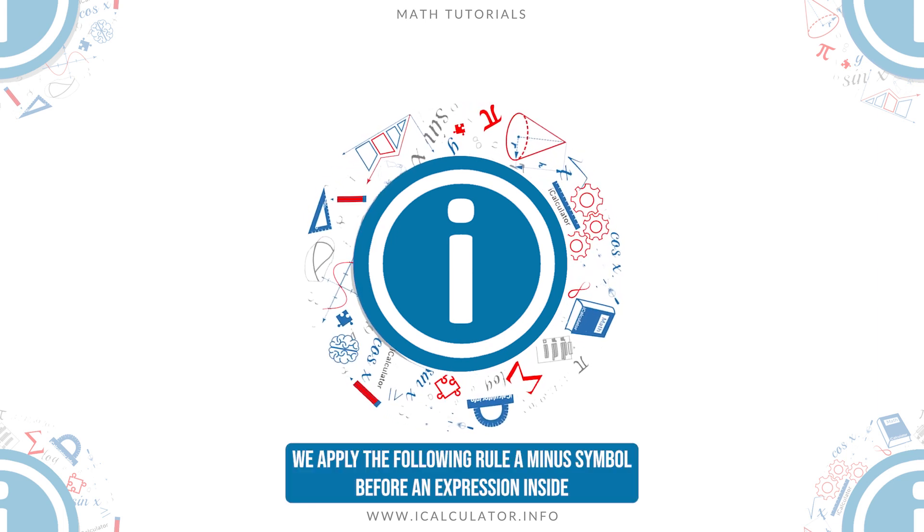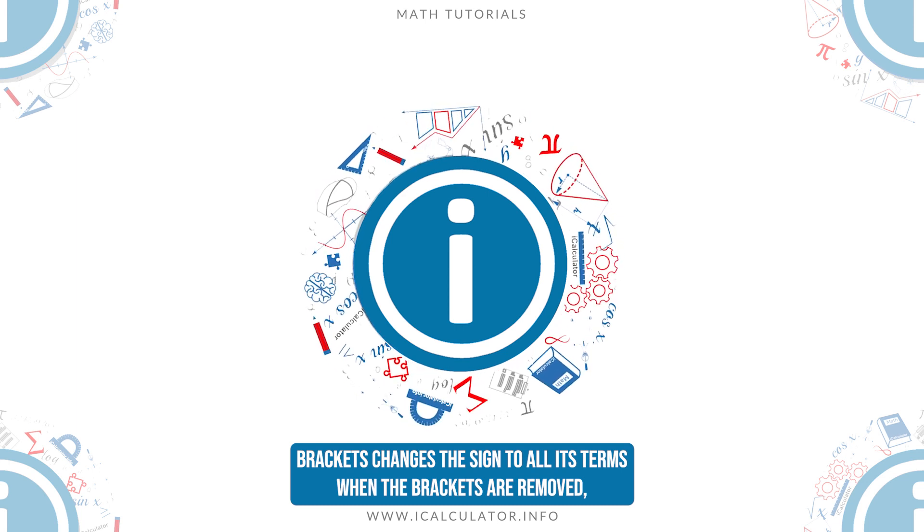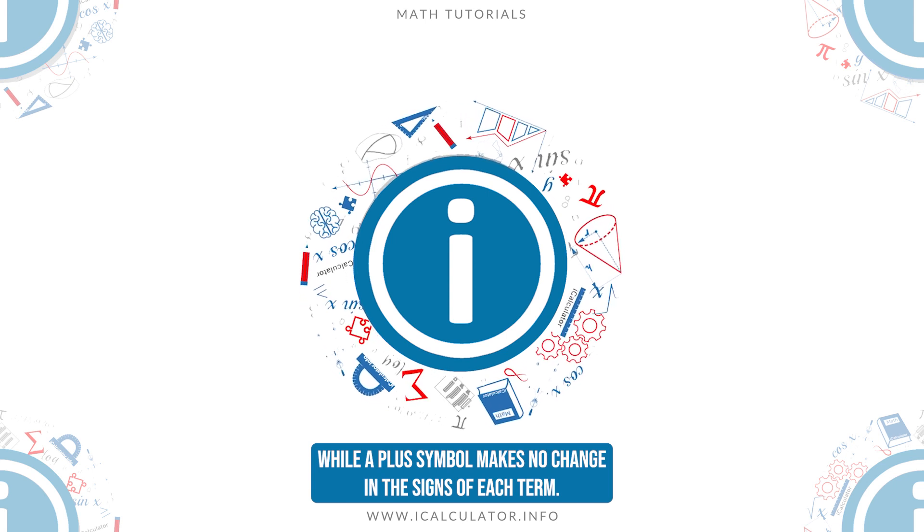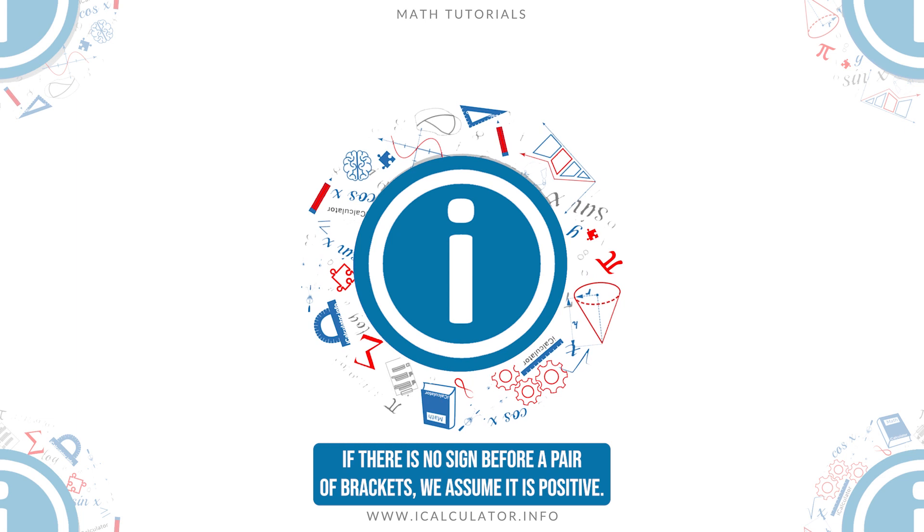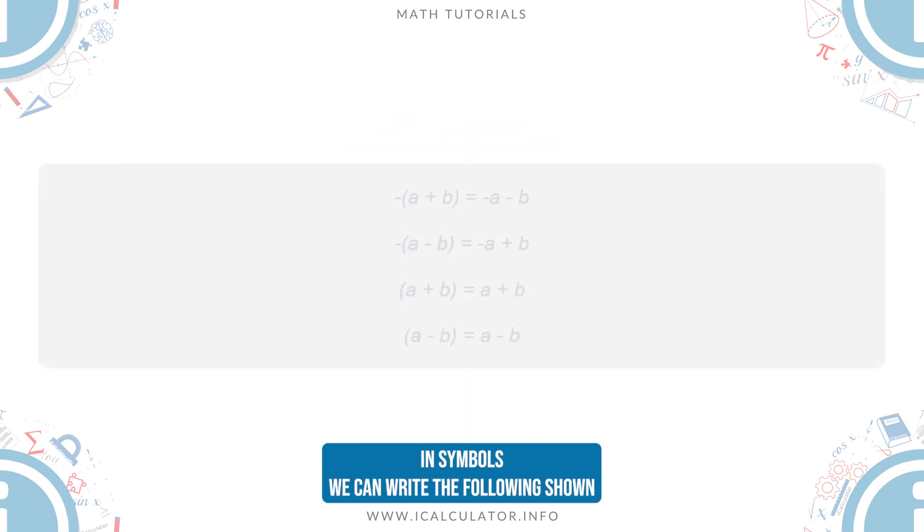A minus symbol before an expression inside brackets changes the sign to all its terms when the brackets are removed, while a plus symbol makes no change in the signs of each term. If there is no sign before a pair of brackets, we assume it is positive. In symbols, we can write the following shown on screen.